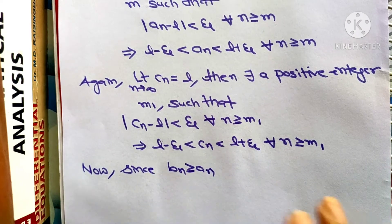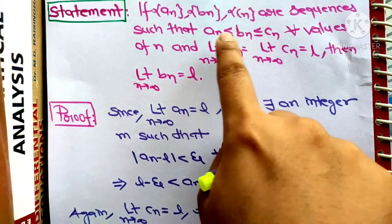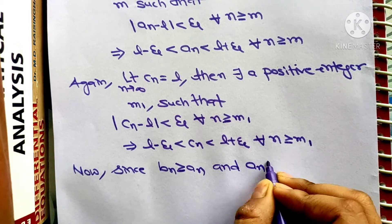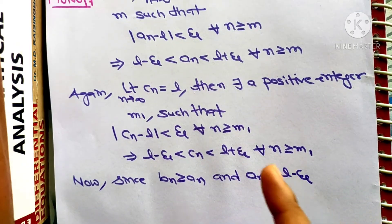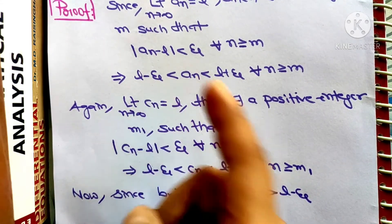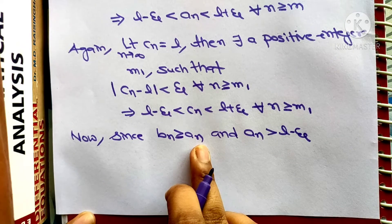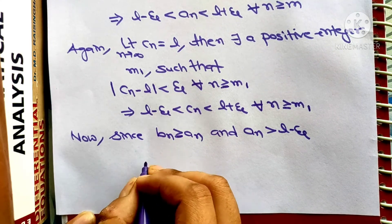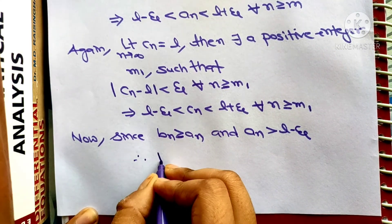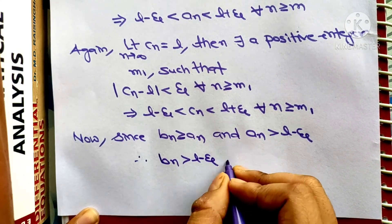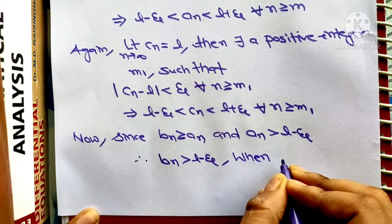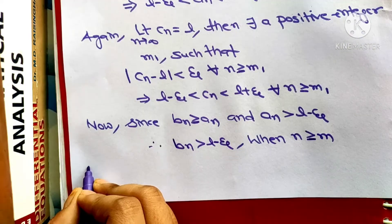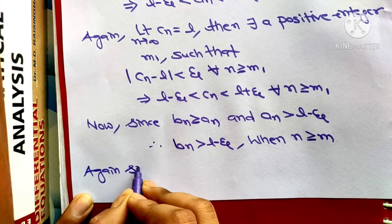Now, since bₙ ≥ aₙ from the theorem hypothesis, and we know aₙ > l − ε, it is obvious that bₙ is also greater than l − ε. Therefore bₙ > l − ε for all n ≥ m.